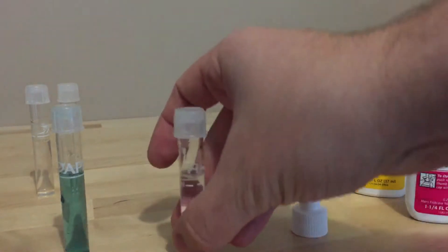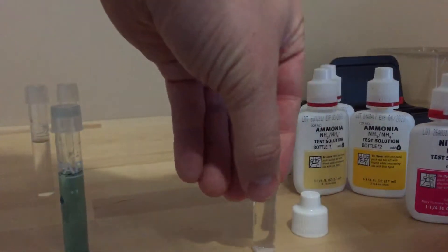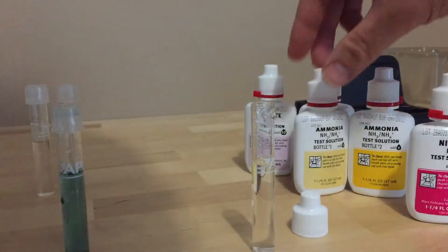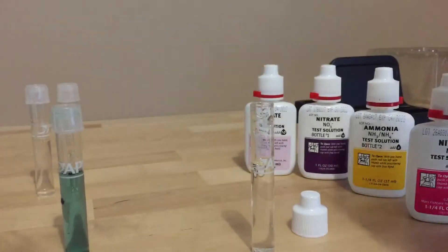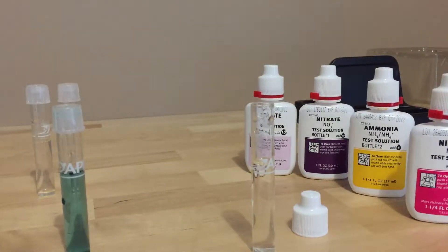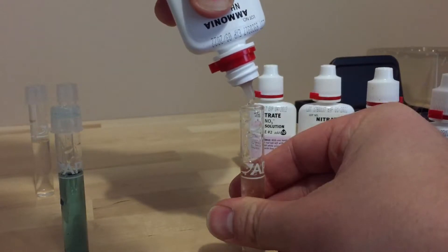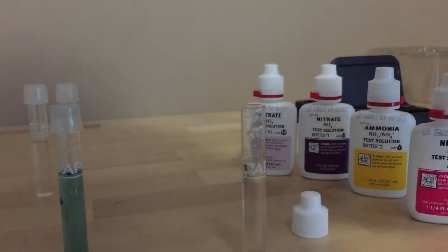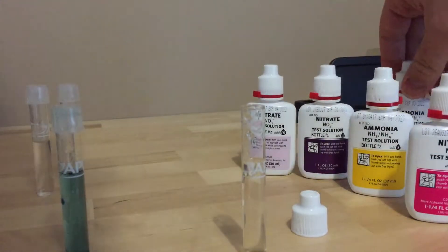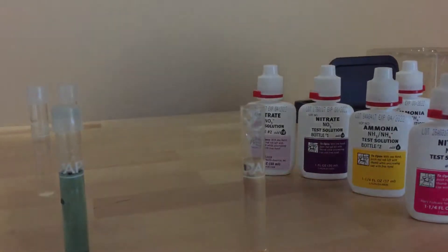So our next one we'll test for is ammonia. There's a bit more to that. If you get your ammonia bottle number one, you'll see it says add eight. So just give it a quick shake and add eight drops. And it is handy if you hold the bottle directly upside down; it helps the drops to come out more evenly.